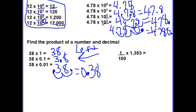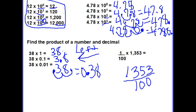If we had 1 hundredth times 1,353, we would take what we know about fractions: 1 times 1,353 gives us 1,353, but that would all be over 100. So we need our answer to represent the hundredths place. To show the hundredths place, we put the decimal between the 3 and the 5, giving us 13.53 — 13 and 53 hundredths — because we want that position to be correct.